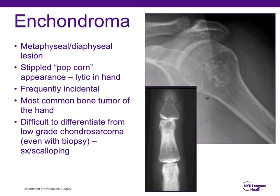Biopsying chondroid lesions can be tricky because certain areas may be lower grade or appear benign, whereas other areas may be higher grade. So we focus mainly on symptoms and whether there is endosteal scalloping to suggest whether or not this lesion needs to be evaluated further for the possibility of a chondrosarcoma. In the phalanges, sometimes the presence of these lytic bone lesions could result in a pathologic fracture with very benign types of injuries.